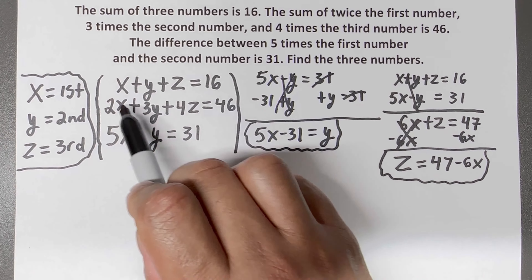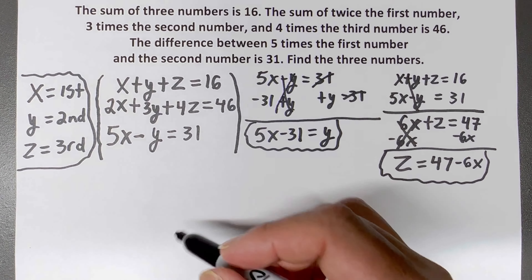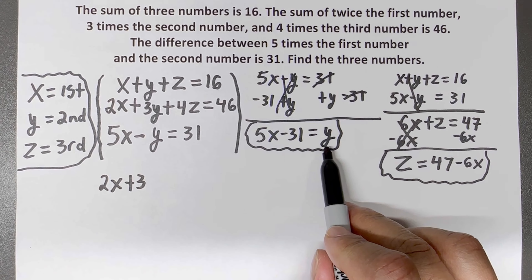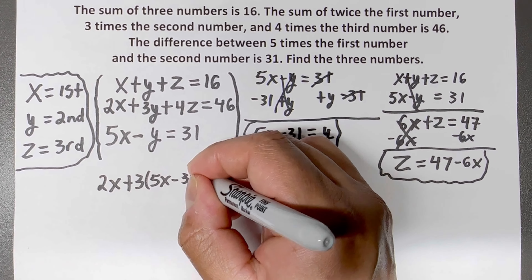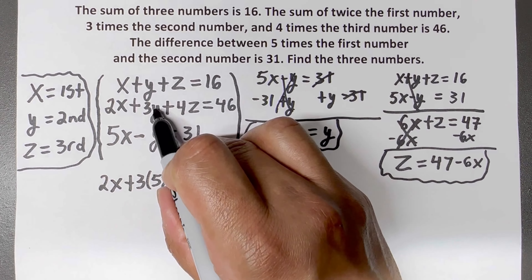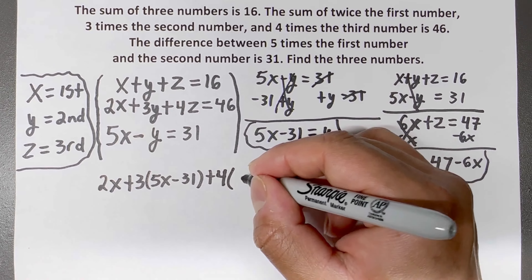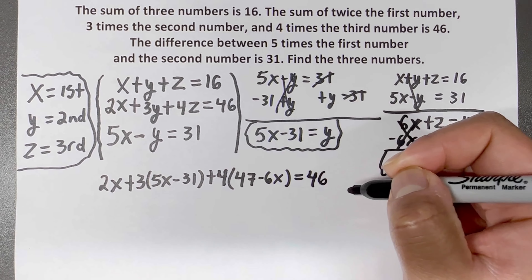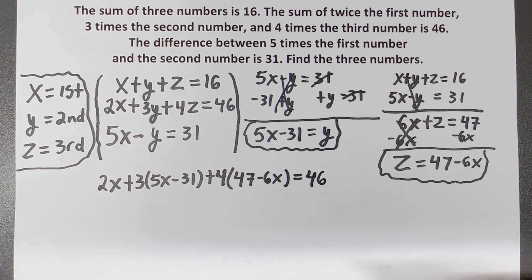I can put both expressions into the second equation, since I haven't used it yet, and solve for x. The second equation says 2x plus 3 times y, but y is 5x minus 31. So I substitute: 2x plus 3 times (5x minus 31) plus 4 times z, and z is 47 minus 6x, all equals 46. Now I have only x's, so I can clean this up and solve for x.